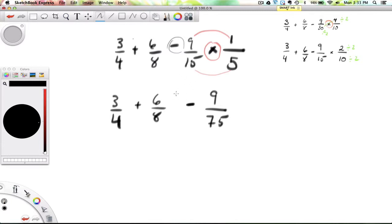And so now the idea is to find the common denominator for all three of these. I'm going to begin by solving these two, this addition. The reason is because I can multiply the 4 by 2, I can multiply the 3 by 2 to get a common denominator of 8. And it becomes 6 over 8 plus 6 over 8 minus 9 over 75.